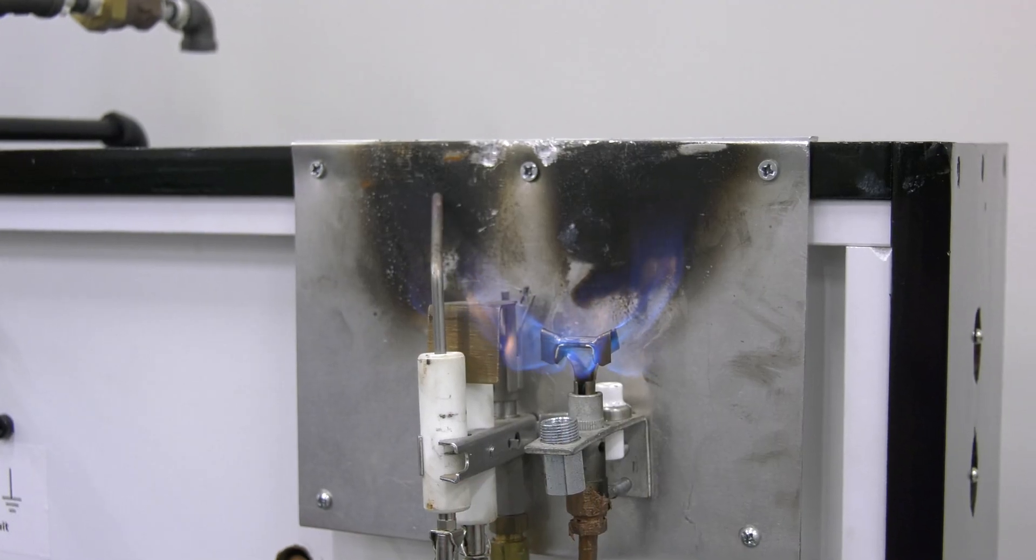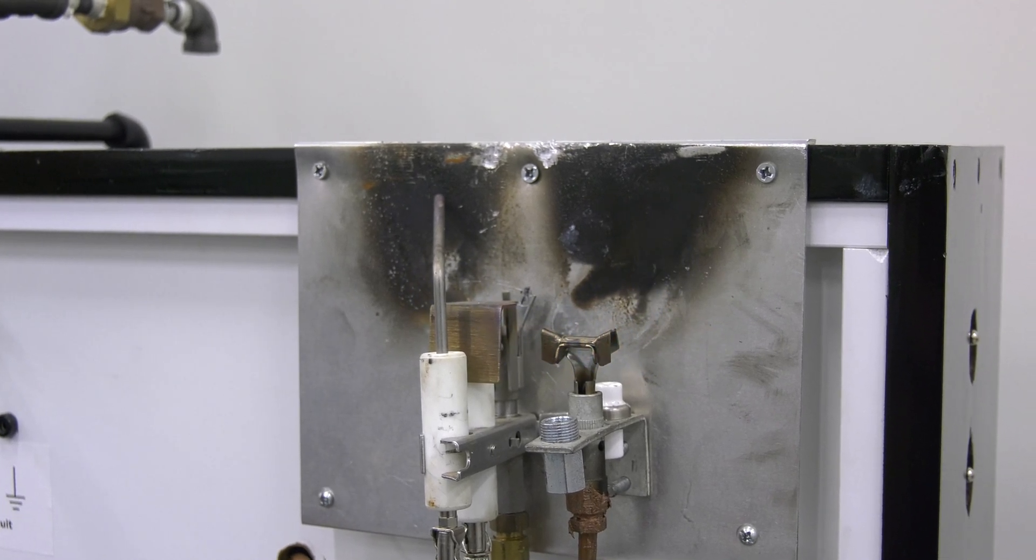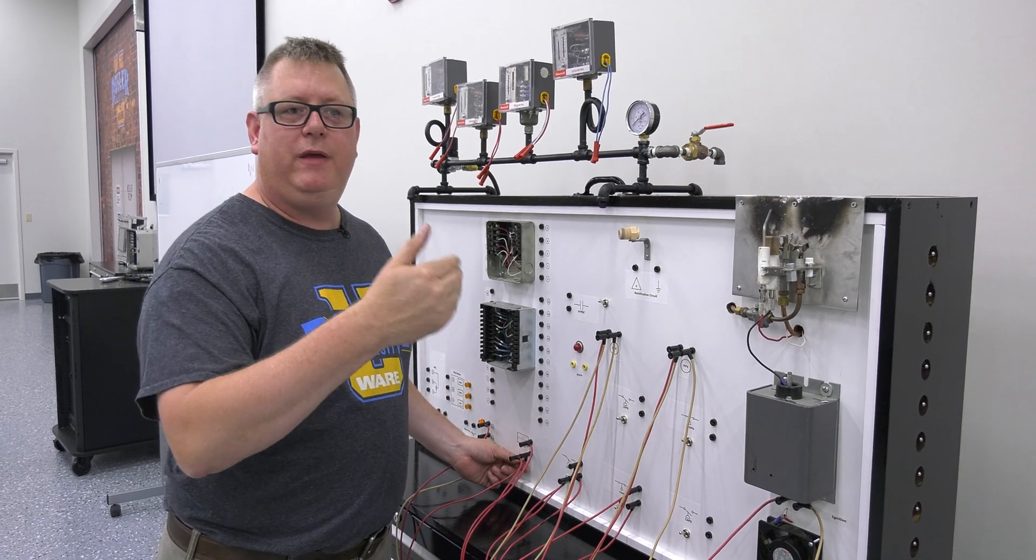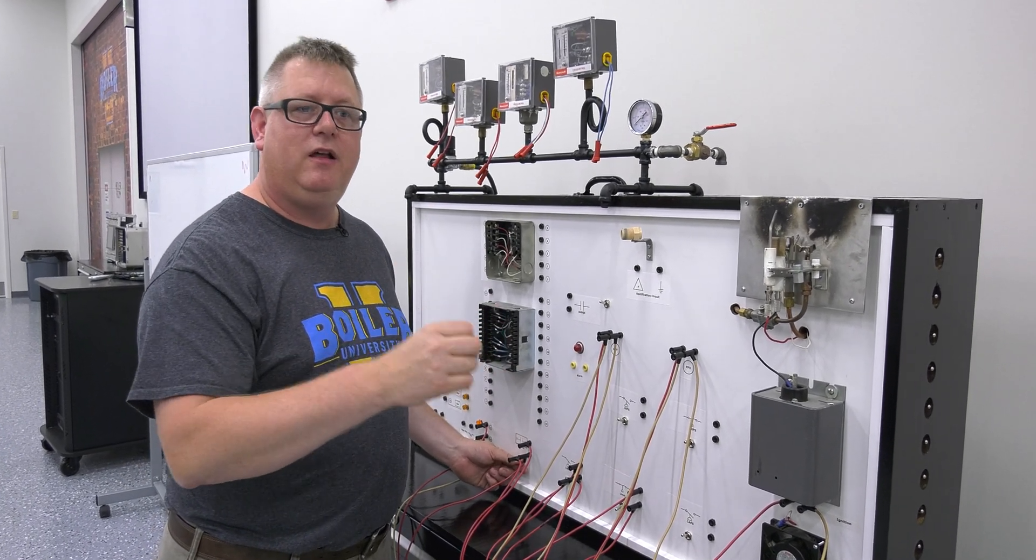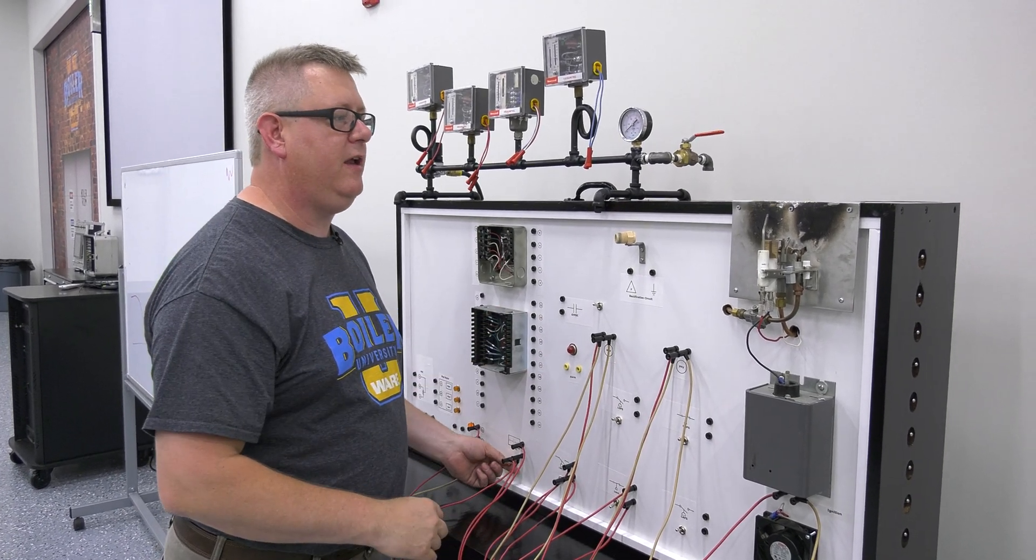The third type of pilot is an intermittent pilot. Intermittent means that the pilot's lit the entire time that the main flame is, but not the spark. So let's look at that.